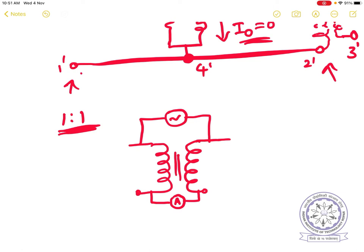Since the turns ratio is equal in this 1:1 case, whatever current I flows into the primary, the same current comes out of the secondary in opposition. Therefore, the net flux phi is zero. Note this is not the same as normal transformer operation — here we are not applying any input voltage to the winding; we are only allowing currents to flow. Since currents are equal and opposite, flux cancels out completely.